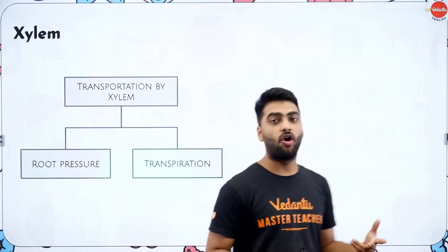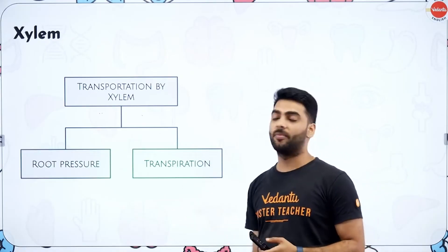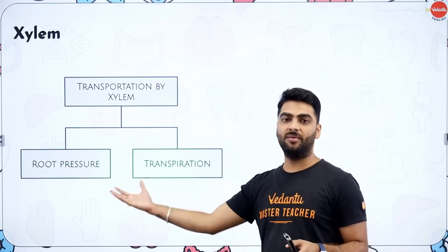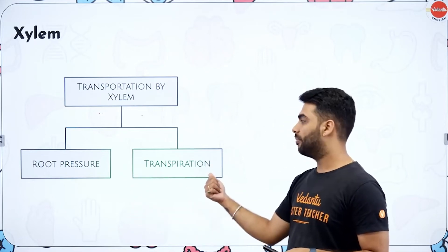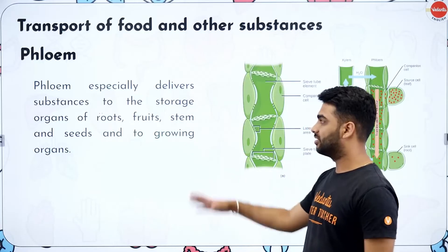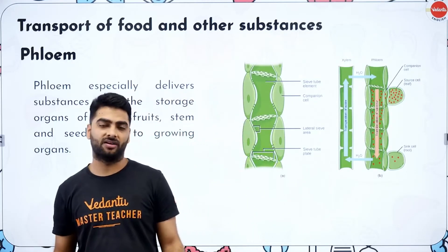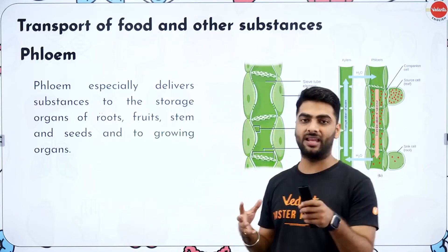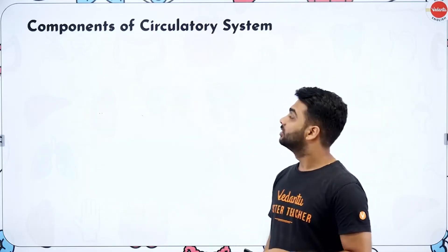For transportation in plants, xylem is involved in the transportation of water and minerals, while phloem is involved in the transportation of food — from the leaves to different parts of the plant. Phloem is bi-directional and xylem is unidirectional.